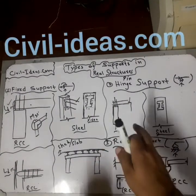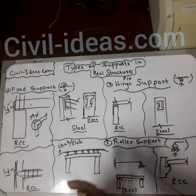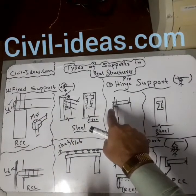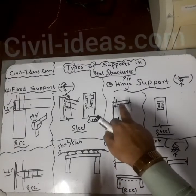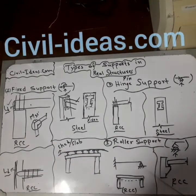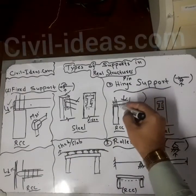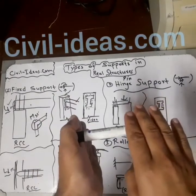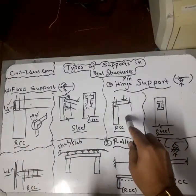Now we will discuss the hinge support. In normal RCC residential buildings, an inefficient contractor may provide reinforcement without proper development length — maybe just two or three inches, or sometimes none at all. The concrete is also low quality with a low grade. These beams do not properly transfer loads to the column, so we consider them hinge supports, not fixed.